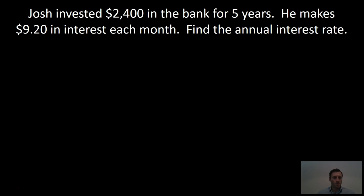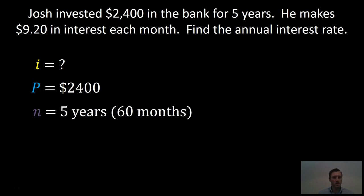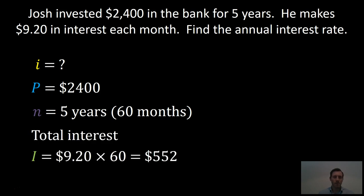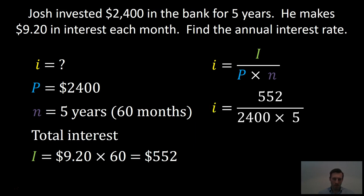Here we have another example. Josh invested $2,400 in the bank for five years and makes $9.20 in interest each month. Find the annual interest rate. This time we're going to use the formula where we convert back to the percentage from a decimal. The principal is $2,400. The time is five years, which converts to 60 months. Total interest is $9.20 times 60, which equals $552. The formula gives us the interest as a decimal equals total interest divided by principal times time. Substituting our values, the interest as a decimal is 0.046, and multiplying by 100, the interest rate is 4.6%.